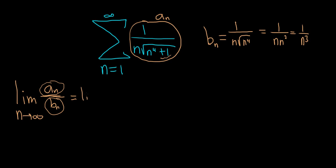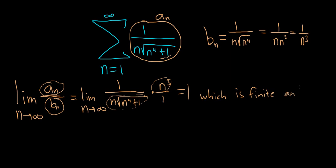Let's evaluate this limit to verify we can use the limit comparison test. a_n is 1 over n times the square root of n to the fourth plus 1. We divide by b_n, or multiply by the reciprocal, n cubed over 1. On the bottom, the leading term will be something like n cubed. We have n cubed here, so this limit should be 1, which is finite and positive. So the limit comparison test applies.